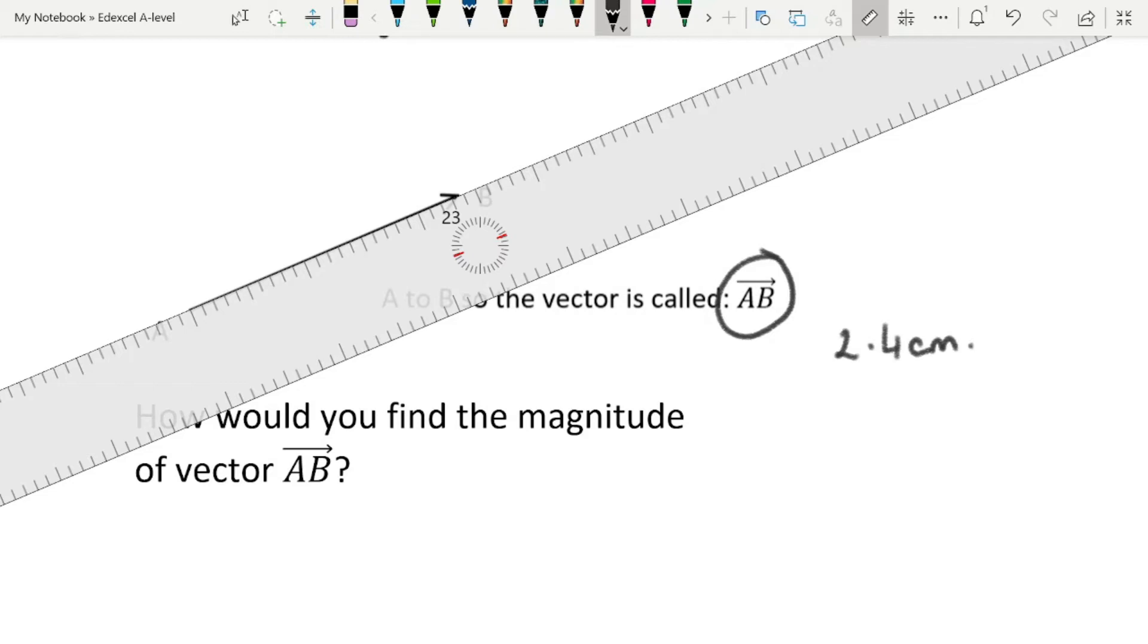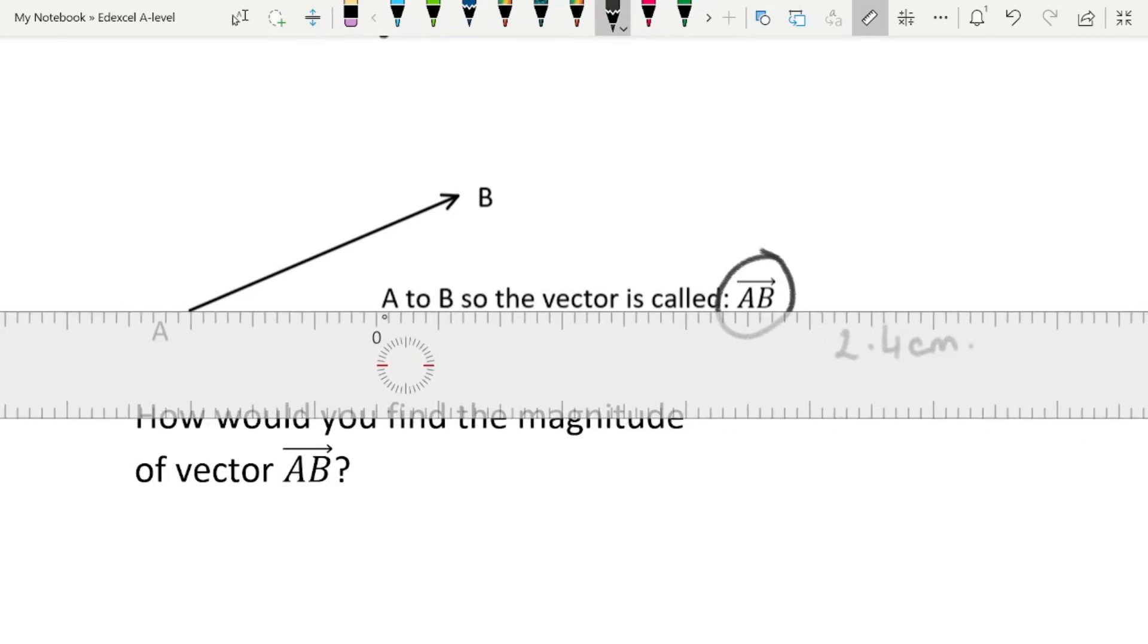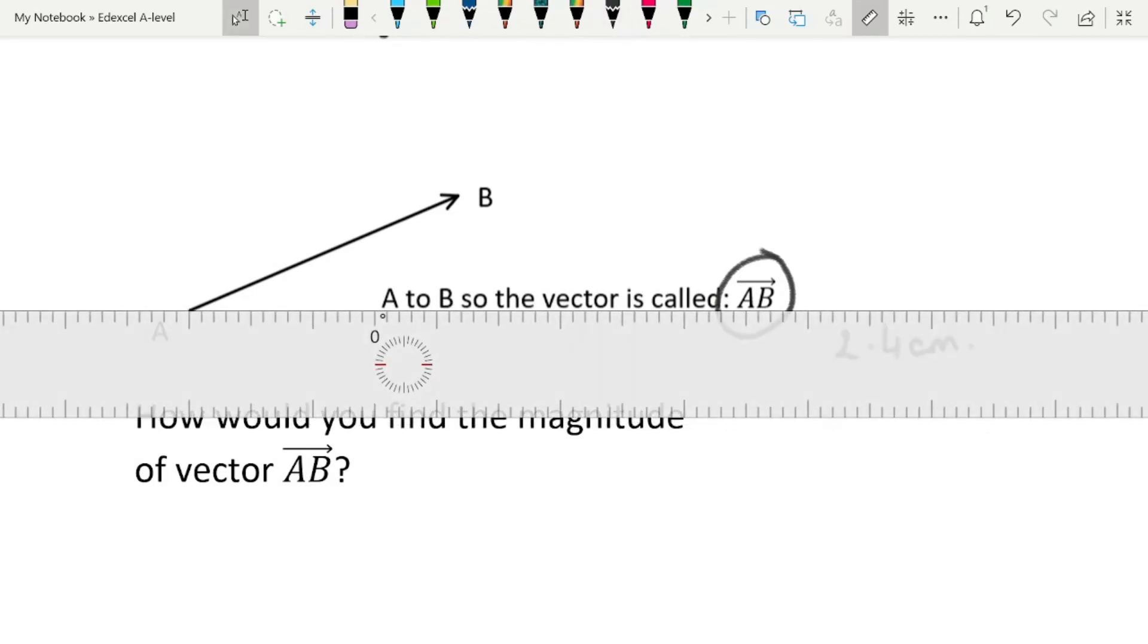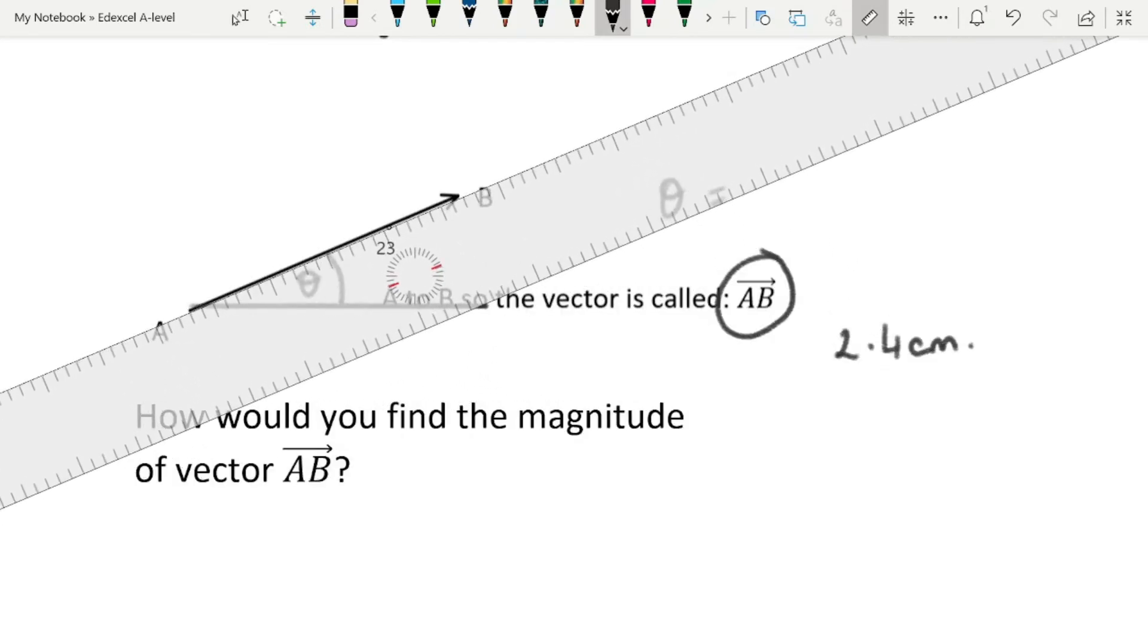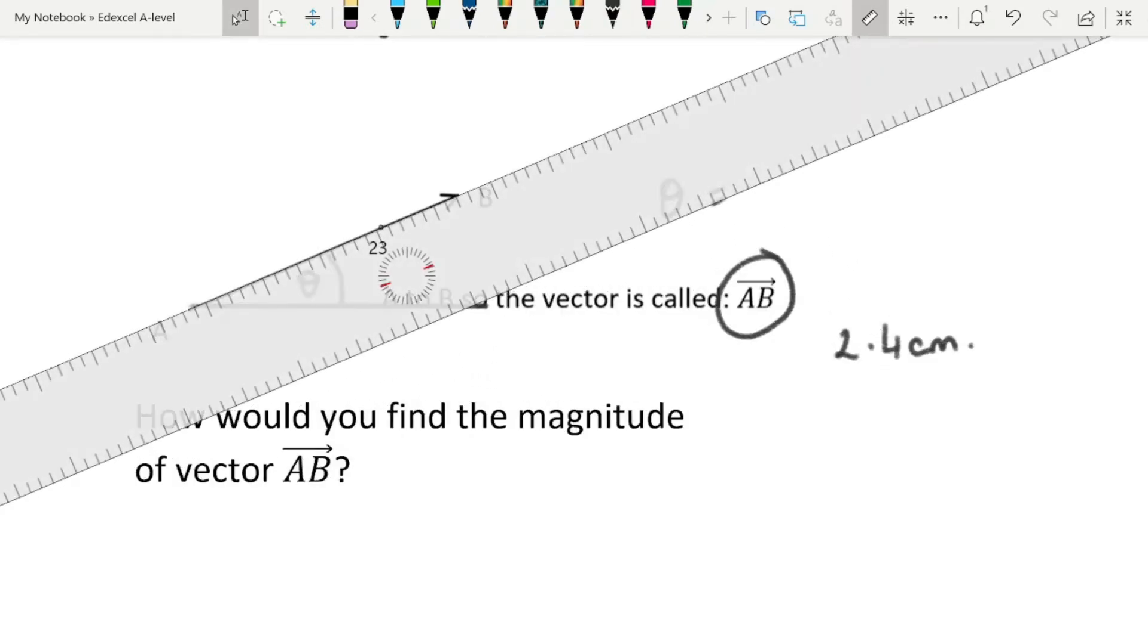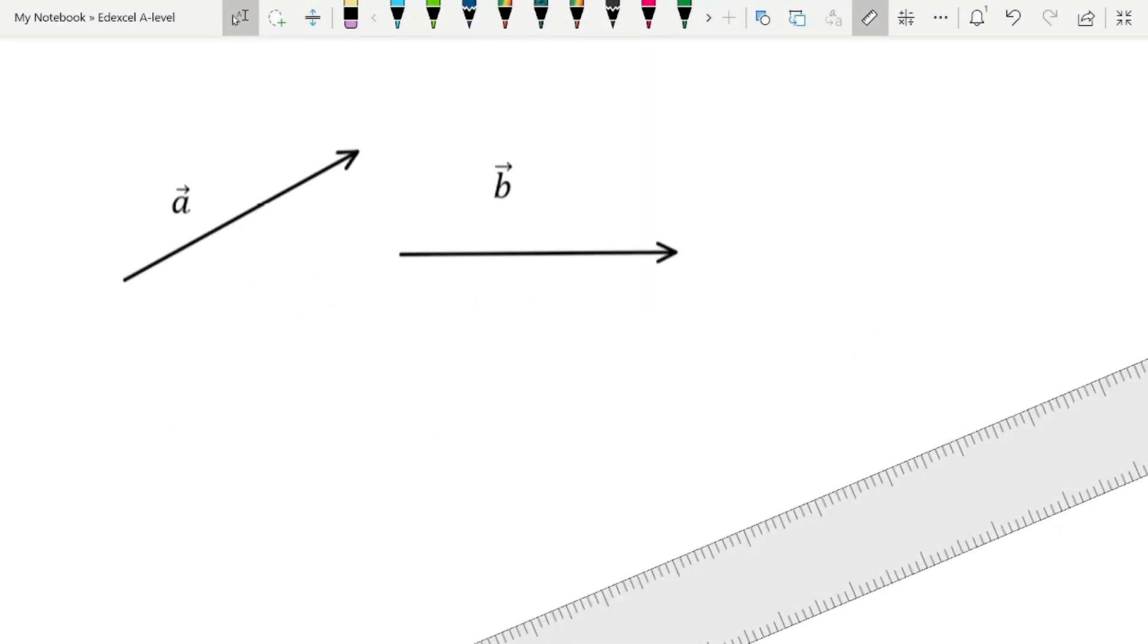1, 2, 2.4 centimeters. Remember, that is simply the magnitude of this. In terms of finding the direction of the vector, what we would normally do, and you wouldn't have a ruler that had a 0 in it like this, but what you would normally do is you would find the angle that it makes with the horizontal and find out what theta is. And in this case, we know that theta is 23 degrees. You would have to use a protractor for that.